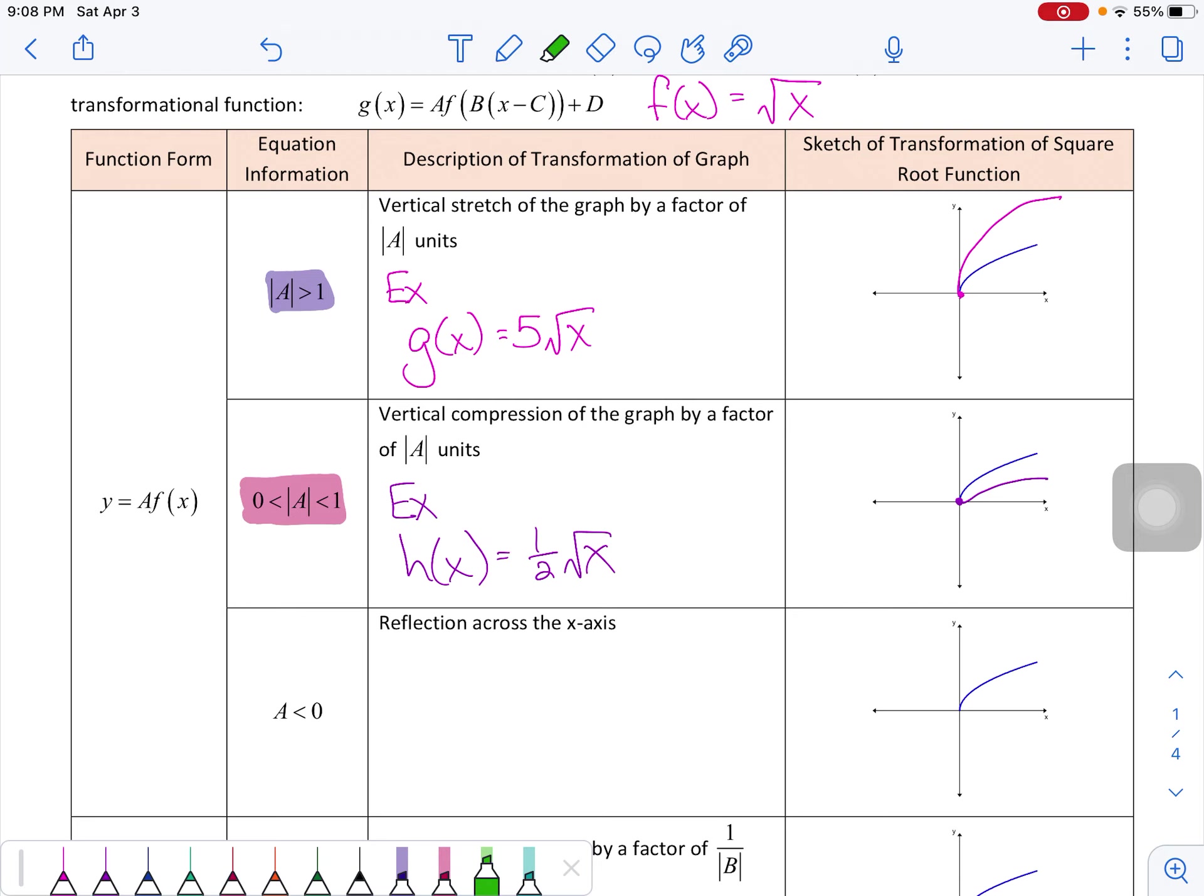Last but not least for the a values here is what happens if a is less than 0. That means a is negative. So let's keep it really simple and just do negative square root of x. This is the reflection over the x-axis. So this original curve, every single point is going to be mirrored over the x-axis.